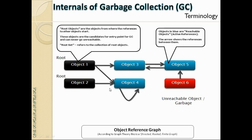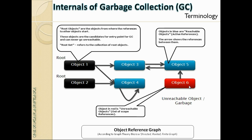Object 2 has a one-to-one reference, and object 4 refers to itself. Finally, object 6, which is in red, is an unreachable object — also called an out-of-scope reference or a weak reference.